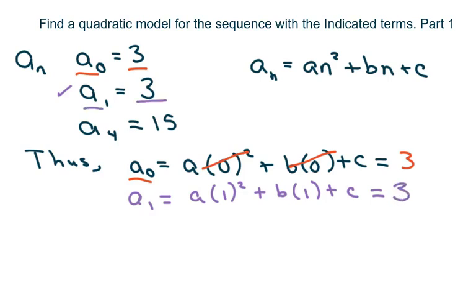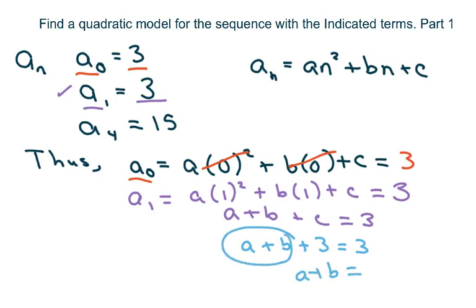And so what we have is a plus b plus c equals three. In this case, we already know that c is three, so we have a plus b plus three equals three. So that means a plus b must be zero.